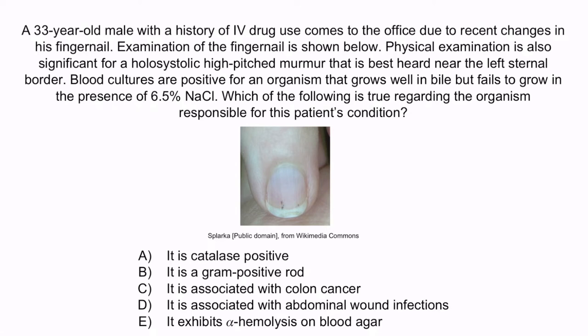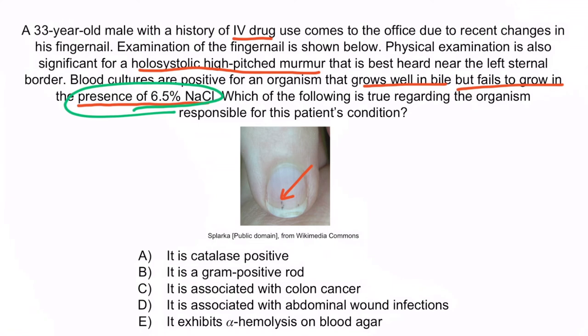Hopefully from the question stem, you notice that this patient has endocarditis, which we can deduce based upon his history of IV drug use, splinter hemorrhages seen in his fingernail, and a cardiac murmur. Because blood cultures reveal an organism that grows well in bile but not in the presence of 6.5% sodium chloride, we can deduce that the organism is most likely Streptococcus gallolyticus. Enterococci can also cause endocarditis and grow in bile, but they also grow well in 6.5% sodium chloride. Therefore, growth versus no growth in 6.5% sodium chloride is an important distinction between Enterococci and Streptococcus gallolyticus.